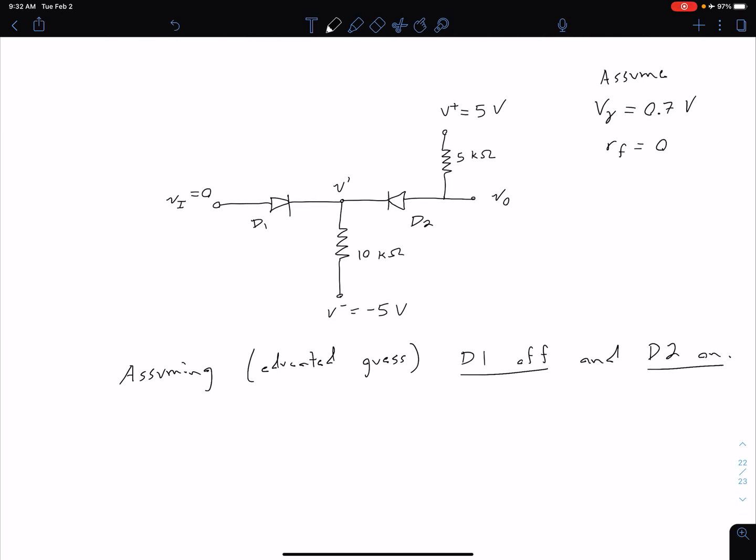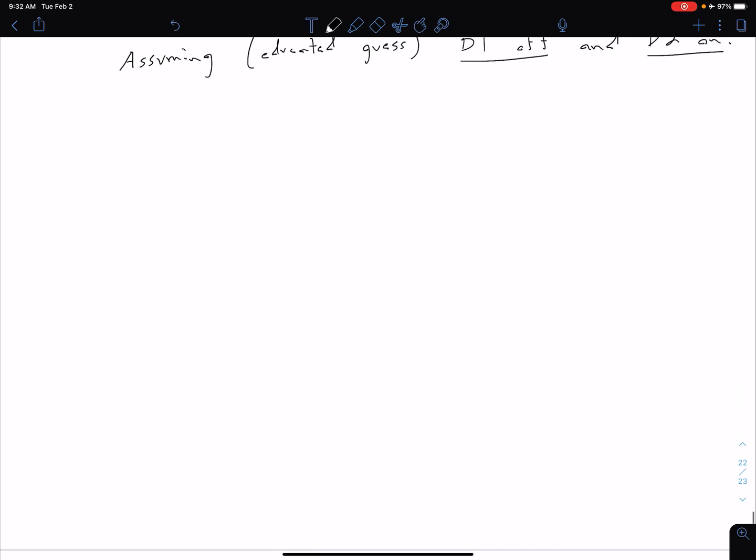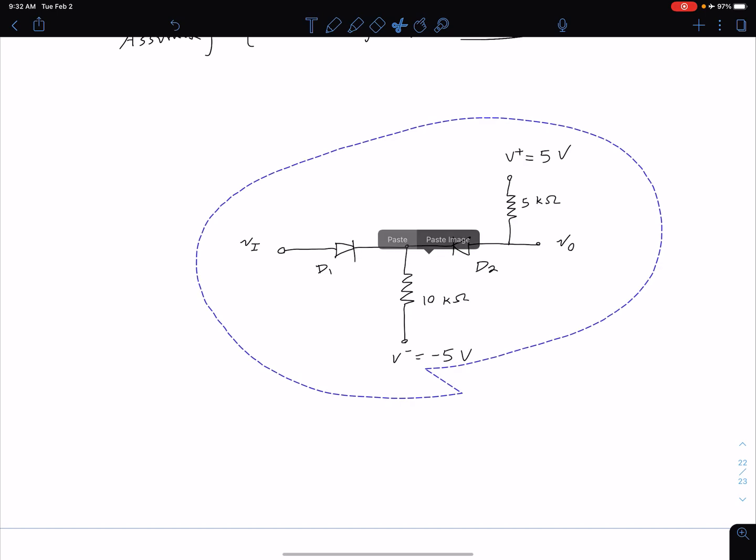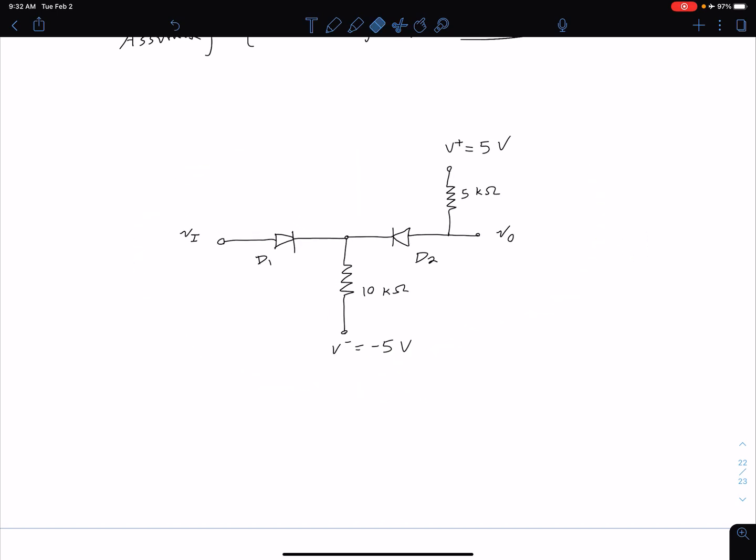All right so the first thing we want to do then before analyzing our circuit is redraw it based on our assumptions. So let me just paste our circuit here and because we're assuming D1 is off we're going to replace that with an open circuit. So we have something that looks like this.